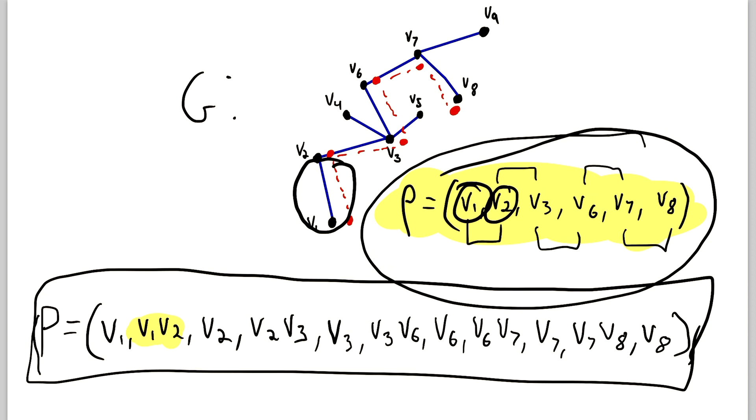It's a sequence of vertices in a graph such that consecutive vertices are adjacent, and no vertex appears more than once. You could think of paths as being how we move from one location to another.